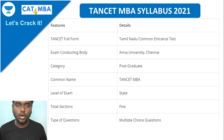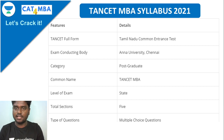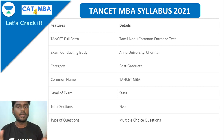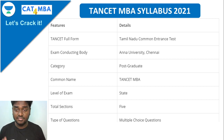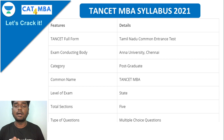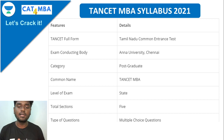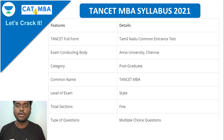Coming to the Tancet MBA syllabus — what you need to exactly prepare — even if you are starting from scratch, the inevitable thing is to know the syllabus for whatever exam you are preparing for. In Tancet MBA there are five sections. All affiliated Anna University colleges located in Tamil Nadu come under Tancet MBA, and the question type is MCQ — multiple choice questions.